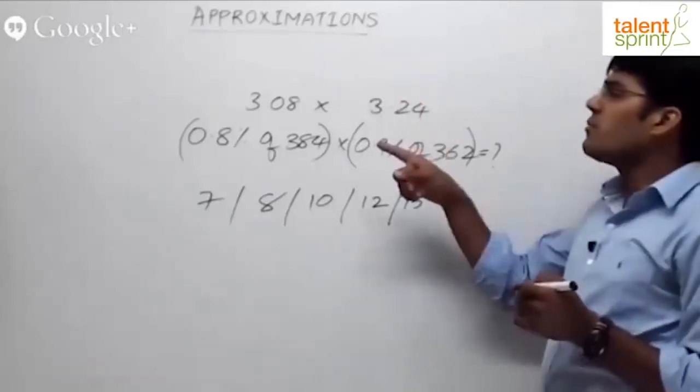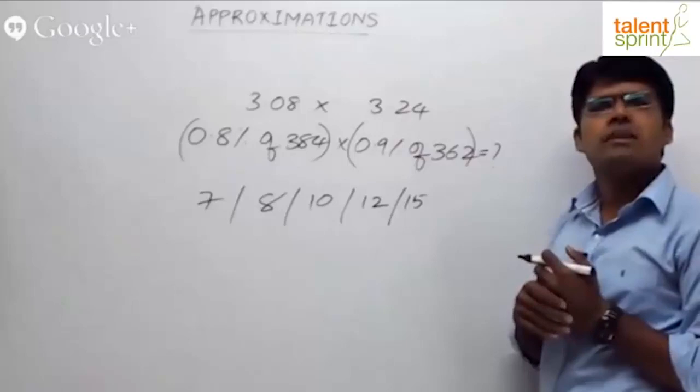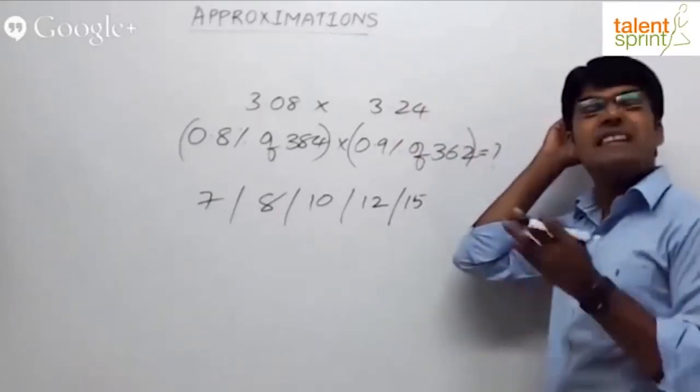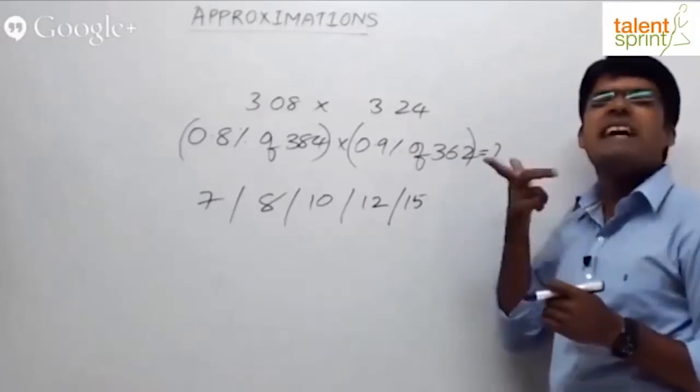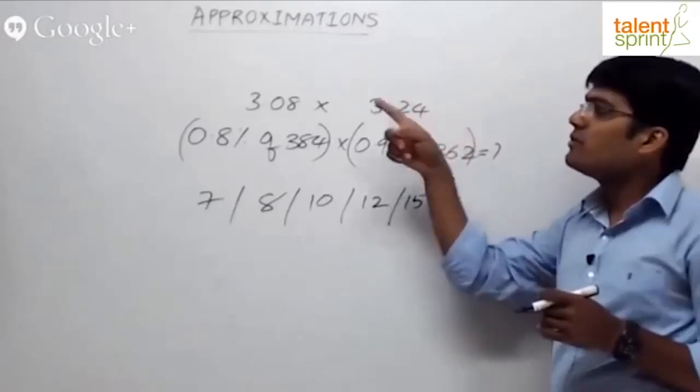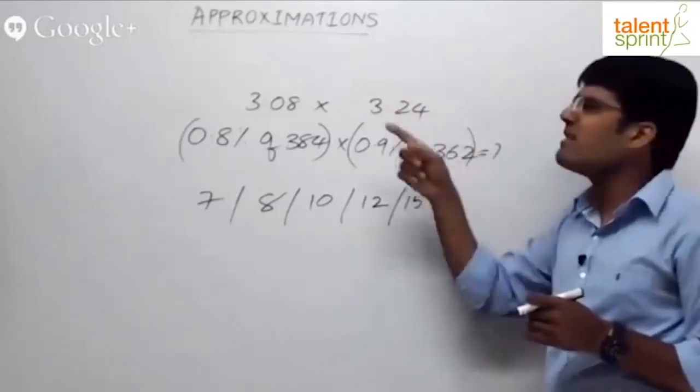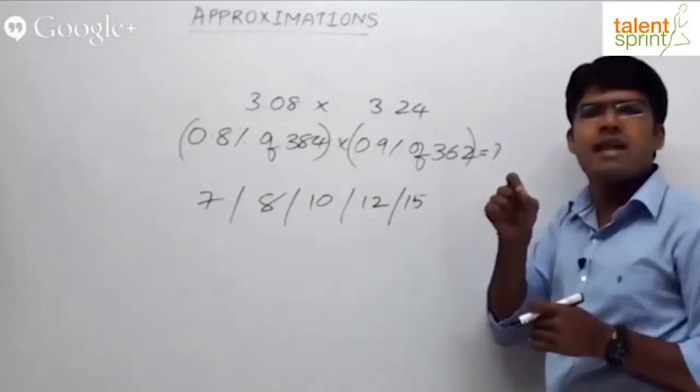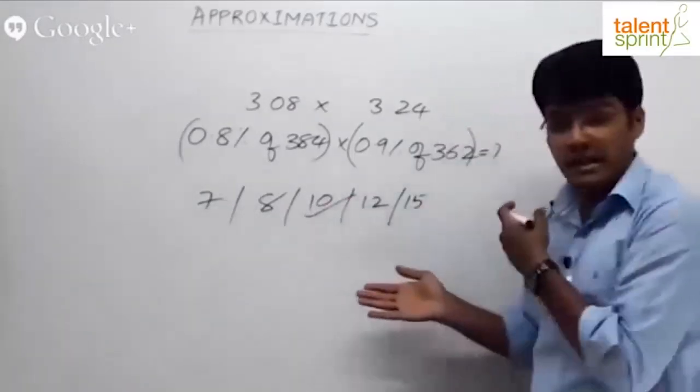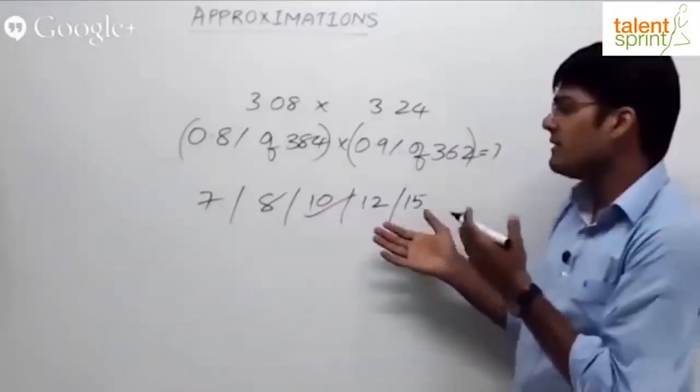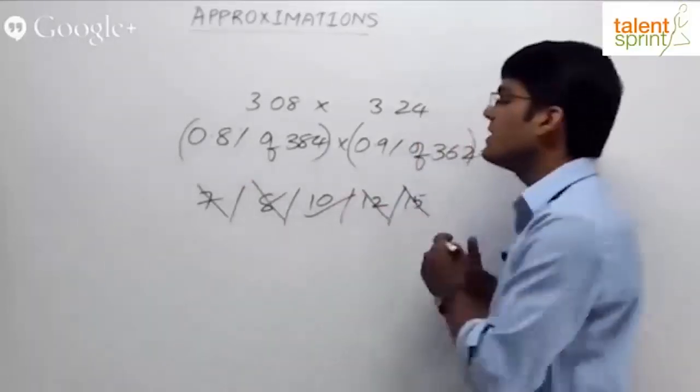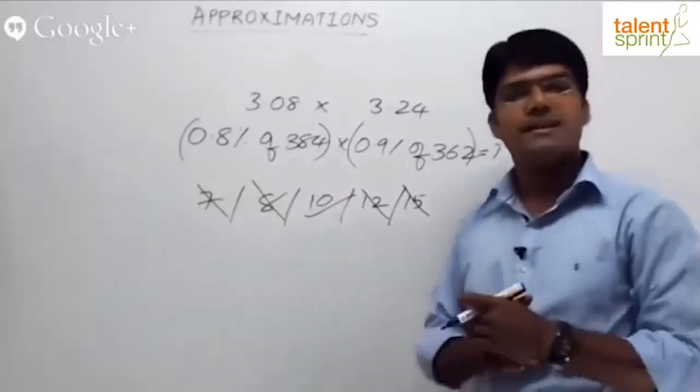That's it. 3.08 into 3.24. 3 into 3 is 9. 0.08 into 3, 0.24 into 3, so 0.32 into 3 is 0.96, plus 0.24 can be neglected. So 9.96, close to that. Though all are close, 12, 10, 8 seem to be close, but then you must be able to mark 10 as the answer without any difficulty. So option 10 can be taken as the correct answer.